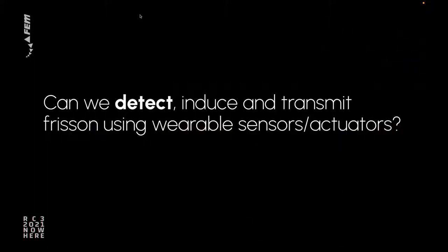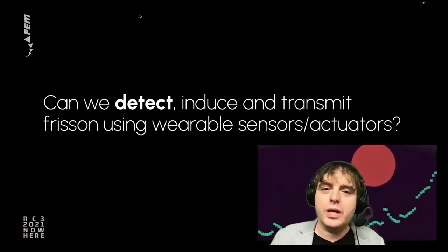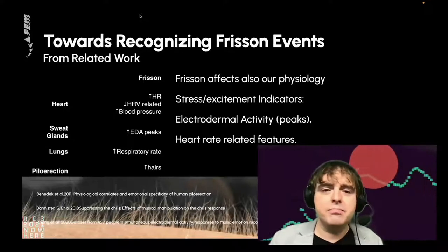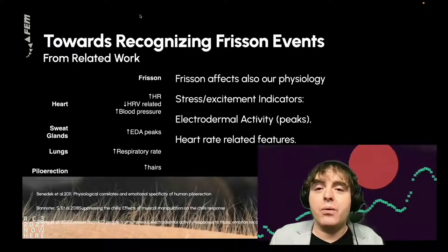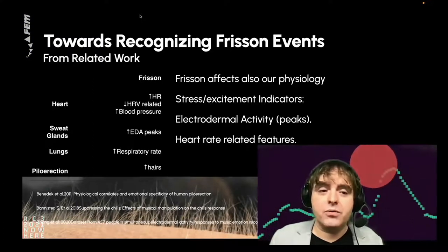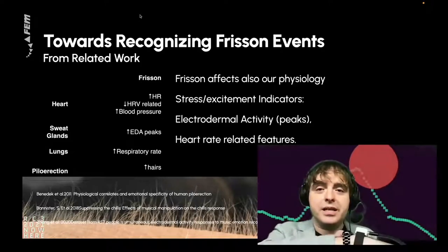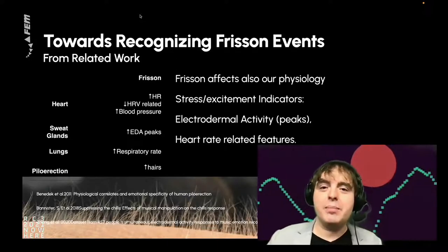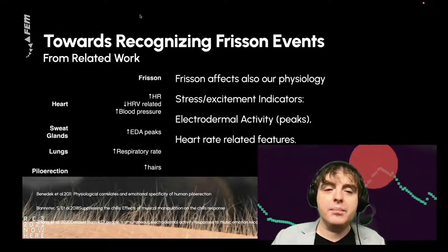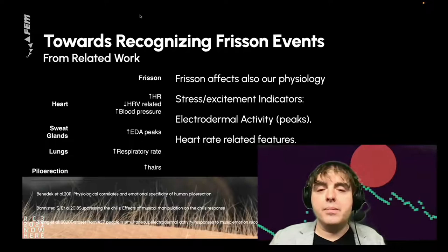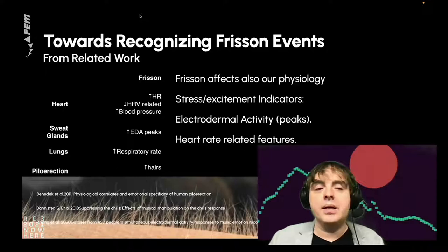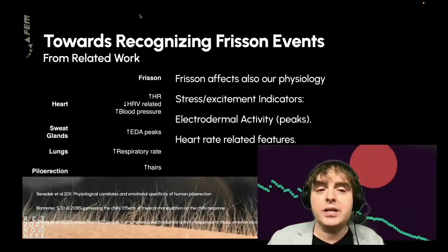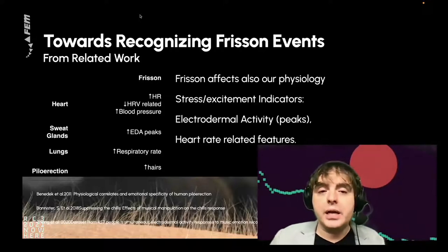Getting back to the aesthetic chills — how could we detect or recognize them? Looking into related work, frisson affects our physiology. The first thing you notice is piloerection — the goosebumps on your arm, the hairs going up. However, that might be difficult because some people might not have much hair. Looking at other physiological changes: respiratory rate goes up, electrodermal activity shows more peaks — a stress and excitement indicator — and heart rate goes up, blood pressure goes up, and heart rate variability features go down.